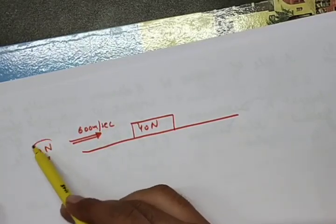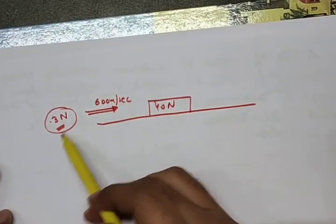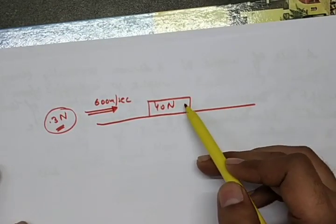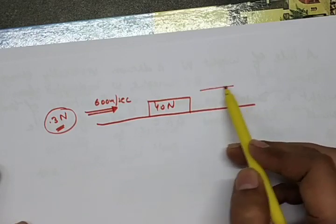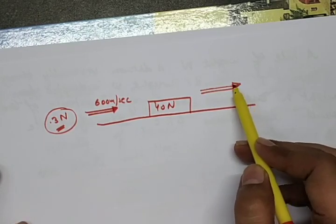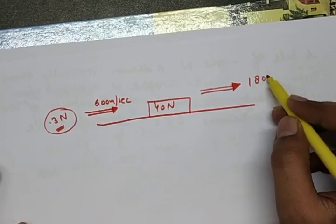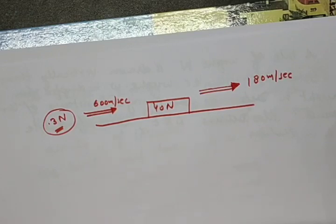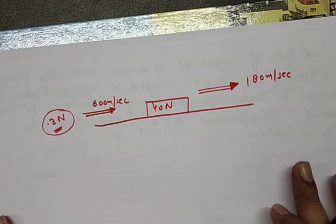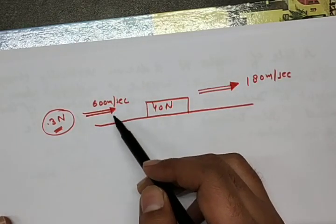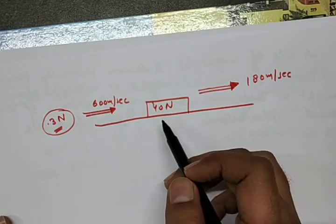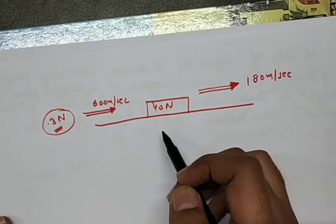Note that weight is given in Newtons. So if you want to calculate the mass, you have to divide it by g, that is 9.8. When the bullet penetrates, its velocity decreases and the final velocity is 180 meters per second. You have to apply the impulse-momentum principle because this is the best approach for this type of bullet-block penetration problem.